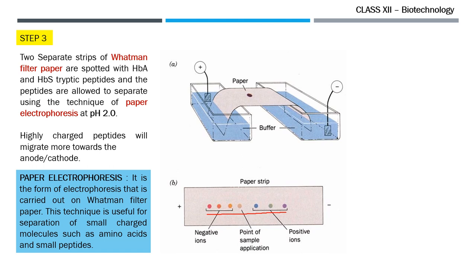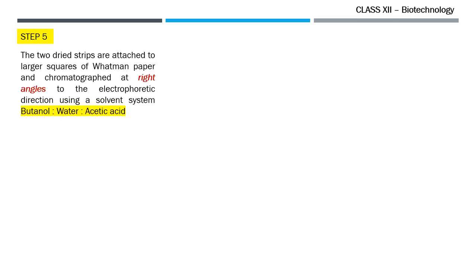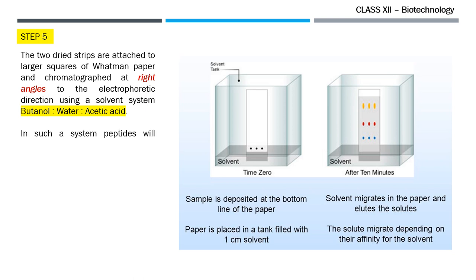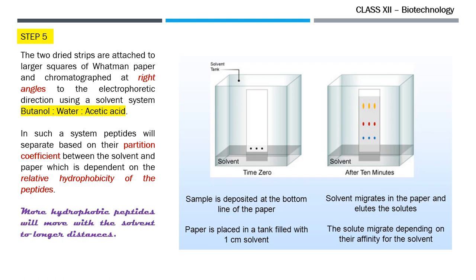He dried both strips. In the next step, he took the two dried strips, attached them to larger squares of Whatmann paper, and performed chromatography at right angles. He used a solvent system of butanol, water, and acetic acid because in such a system the separation of peptides would take place on the basis of partition coefficient. The partition coefficient between the solvent and the paper is dependent on the relative hydrophobicity of the peptides — that is, more hydrophobic peptides will move with the solvent to a longer distance. So in the first step the separation of peptides took place in one direction, while in the next step the separation took place at a 90-degree angle. This resulted in the two-dimensional separation of the peptides on the basis of two different criteria.